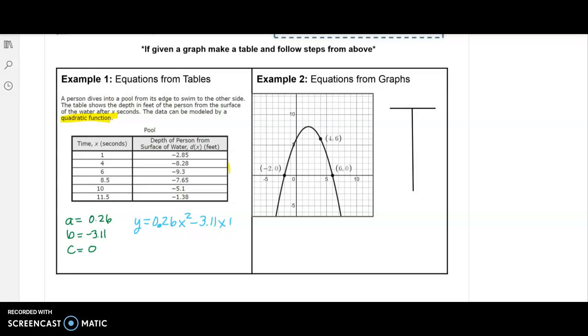And normally, we'd put the C value on the end. But do we really need to put plus 0? It's like you're adding nothing. So I would not even include it. So this would be our final answer. You should have an X squared, an X, and a constant as your final answer.